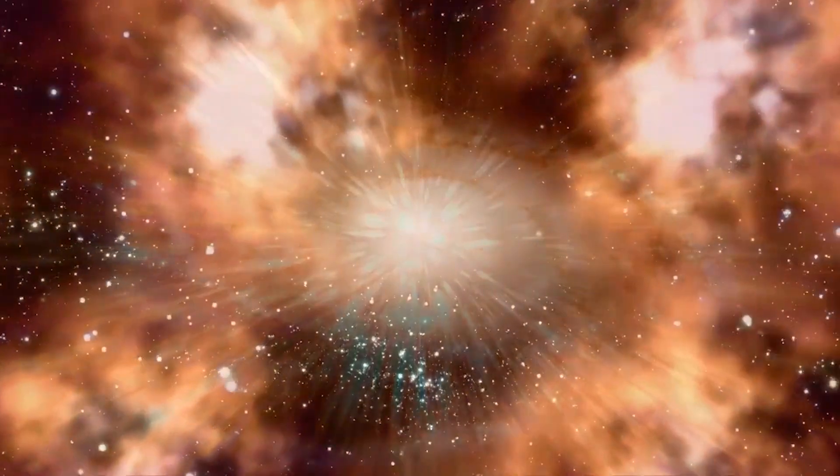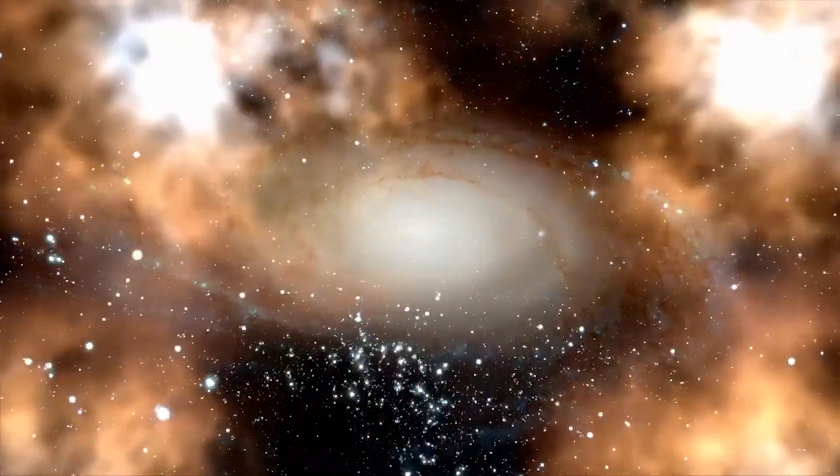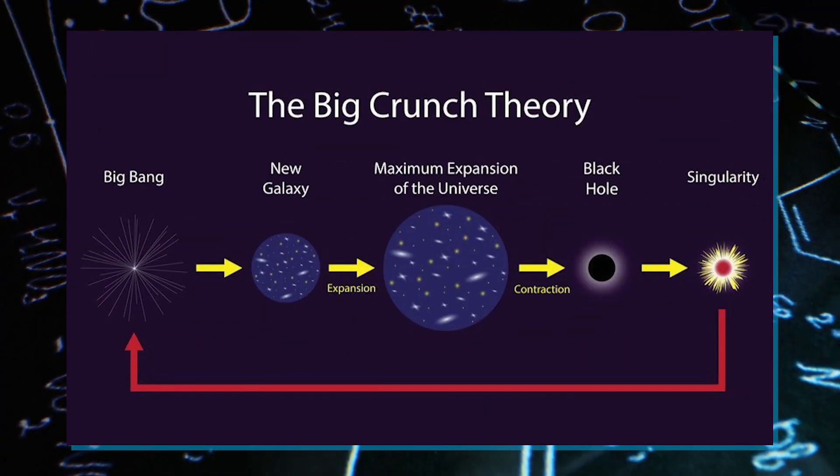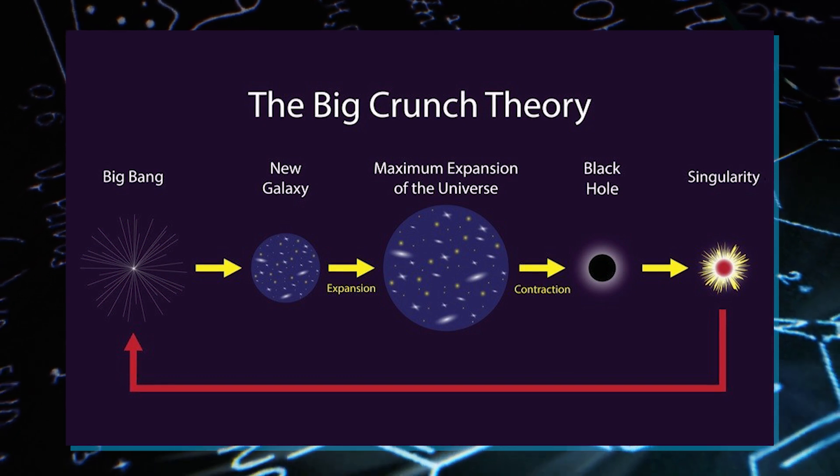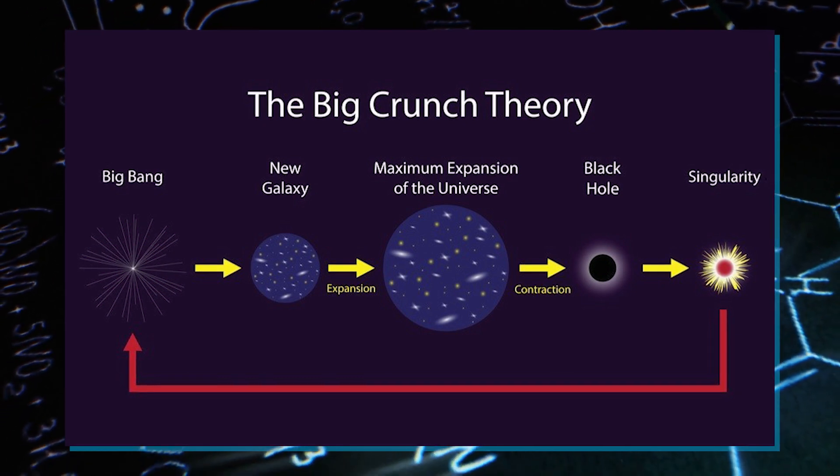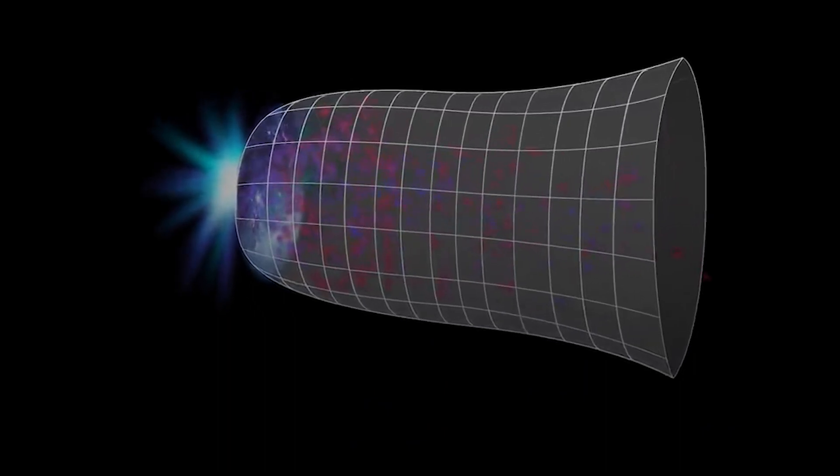He thought that the circular patterns we see in the early universe radiation might be very old photons from black holes in the previous universe. These patterns might not look important to most people, but to a scientist, they carry traces of an older universe. Penrose's theory goes against the idea that the universe will collapse into a big crunch and start over with a new Big Bang.